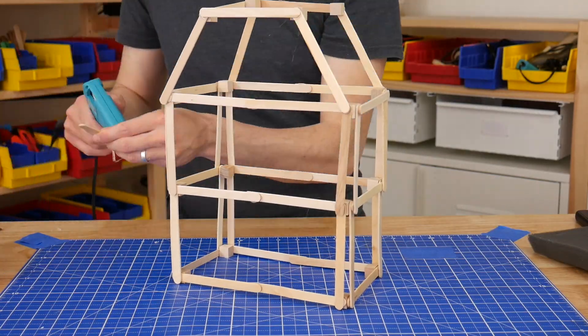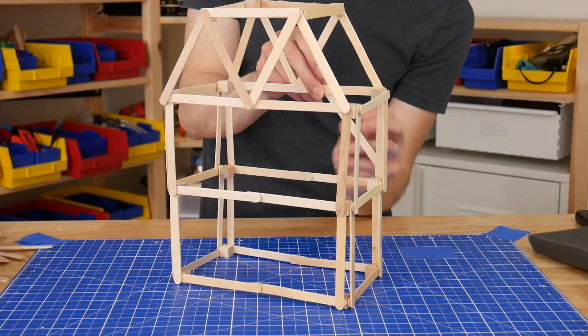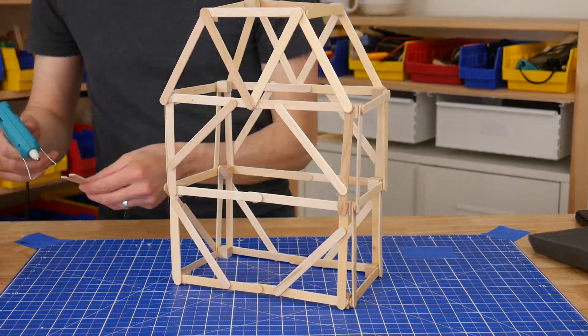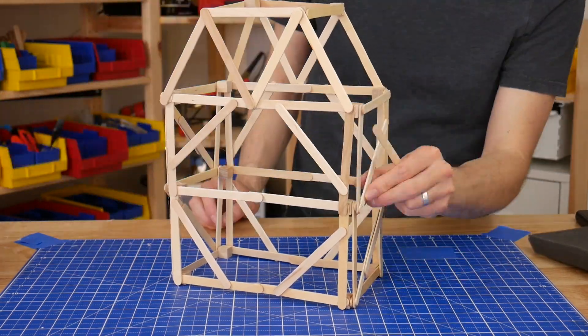And the second thing is to make sure to incorporate triangles or trusses into your design. This is because triangles endure compression forces a lot better than square shapes.